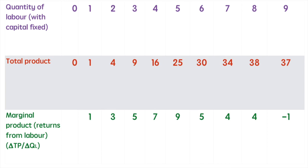As we increase labour from 0 to 1, we increase our total production from 0 units to 1 unit. Therefore, marginal product is 1. Bringing in the second worker increases total production to 4 units from 1 unit, which means their marginal product is 3 units.